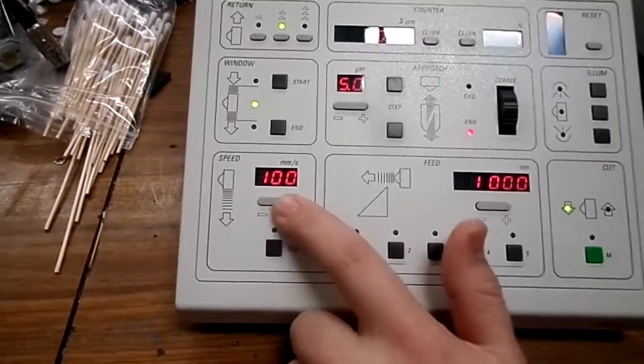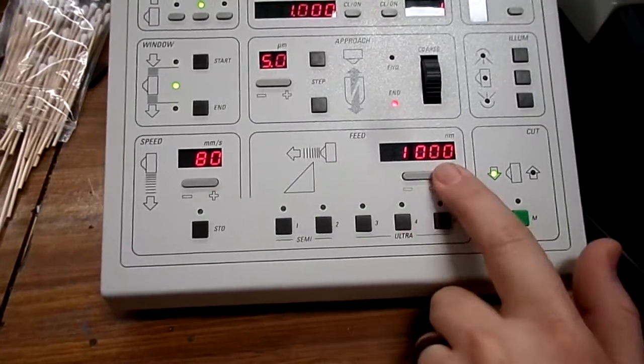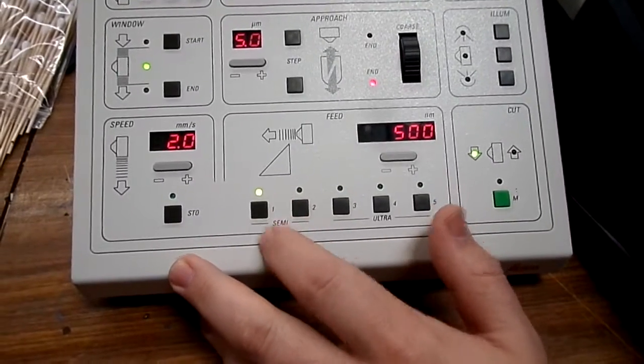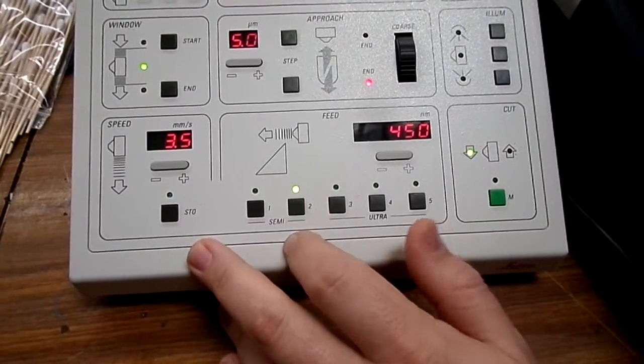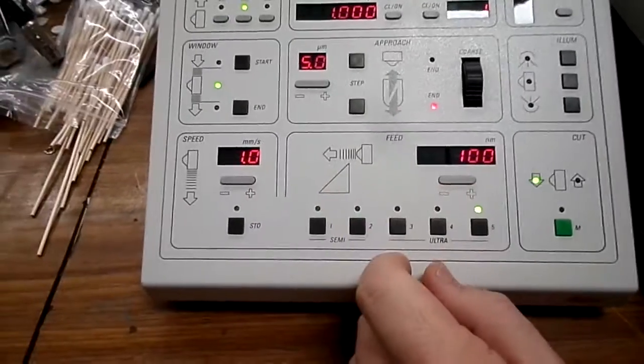You have your speed, up and down. You have your feed. You can adjust these manually. There are certain programs already in the machine. You hit the button twice to select it. Different thicknesses and speeds.